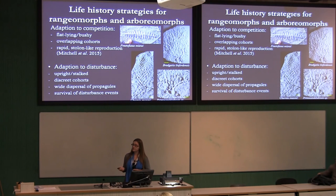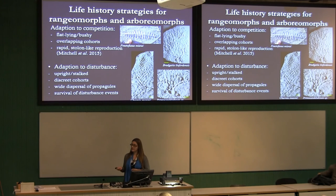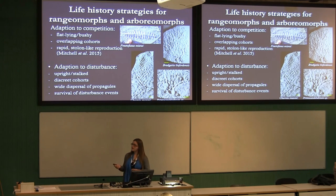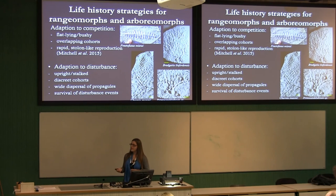We can say something about the life history strategies for the different rangomorphs. Some seem more adapted to competition — the flat-lying, bushy forms have overlapping cohorts showing fairly rapid reproduction, and are found preferentially on surfaces with very low sediment input. Emily has shown that Fractifusus reproduces in a stolon-like way, which is really consistent with an early colonising form. The upright and stalked forms, more commonly found on surfaces with high disturbance, have discrete cohorts — perhaps taking longer to reach maturity — and widely disperse propagules. As Frankie mentioned, Charnia is really a cosmopolitan taxon, and we have evidence that it can survive disturbance events.